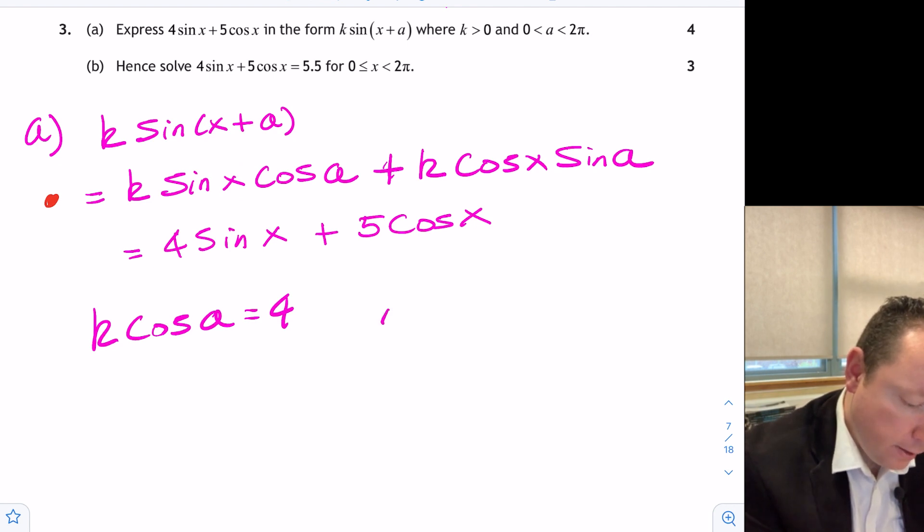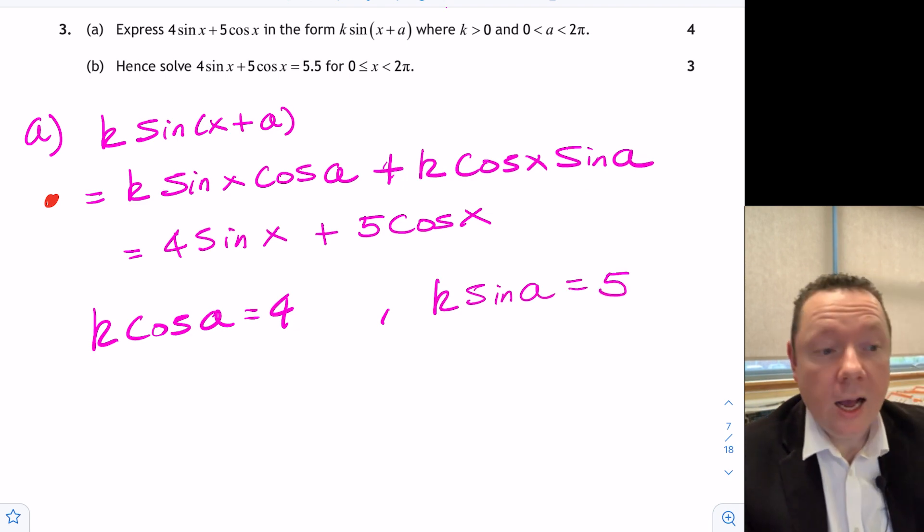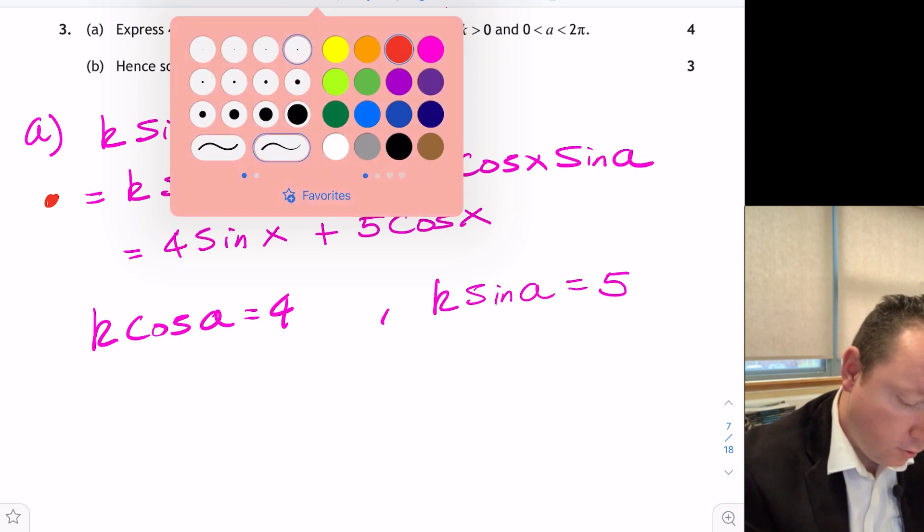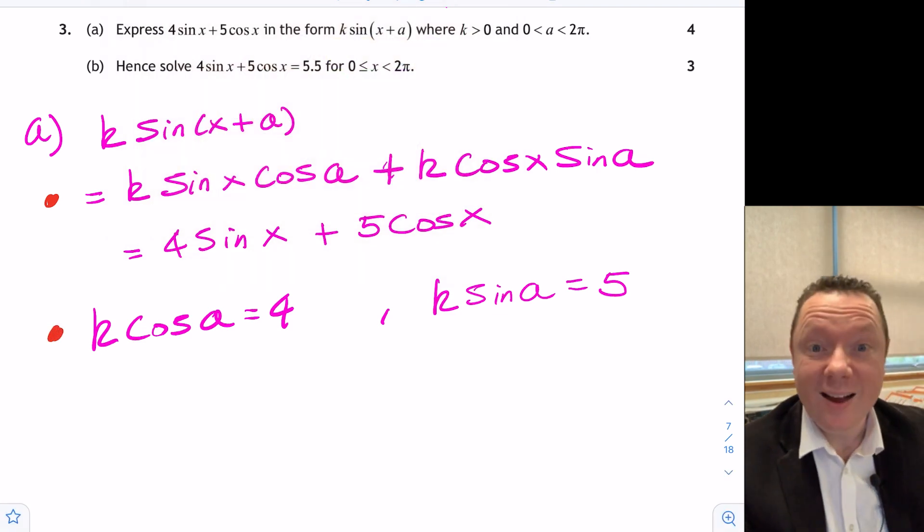And similarly, the coefficient of cos x is 5, so k sin a must equal 5. And we get a mark just for writing that down as well. As long as we've written that down explicitly, we get a mark.